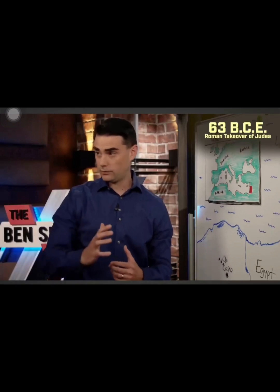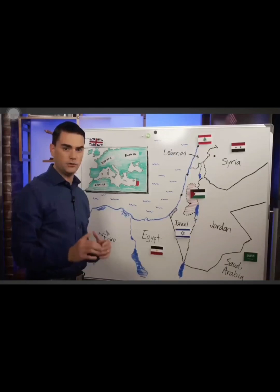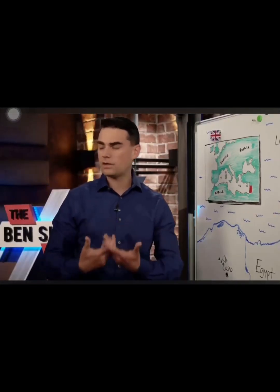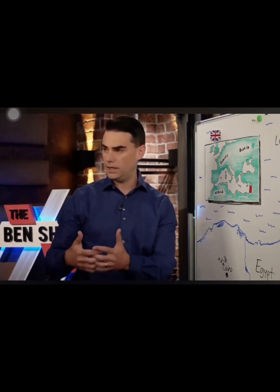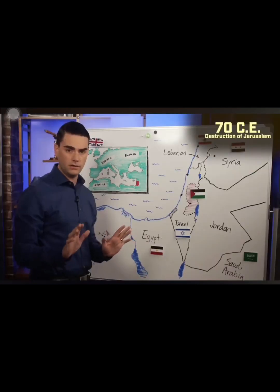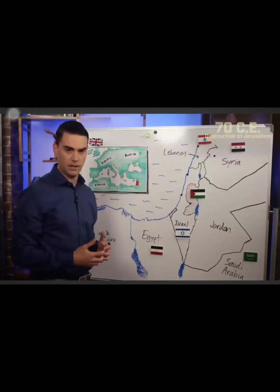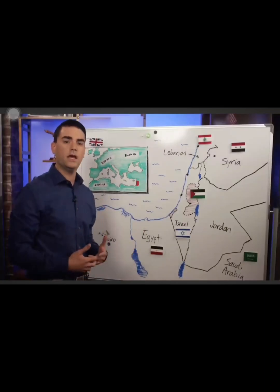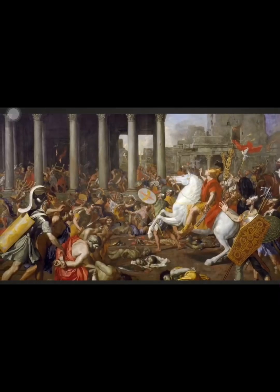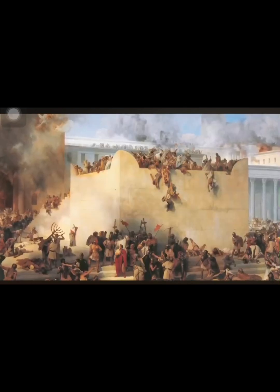In 63 BCE, the Romans take over. Pompey — not the emperor, just the general — takes over the area, and Judea becomes a vassal state of the Roman Empire, basically through the end of an independent Jewish kingdom. It's called Judea at this point, not Israel. In 70 CE, Jerusalem is destroyed following a Jewish revolt against the Roman government because of bad administrative practices, infighting, and a crackdown on religious practice. Not only is Jerusalem destroyed, but the second temple is destroyed as well.